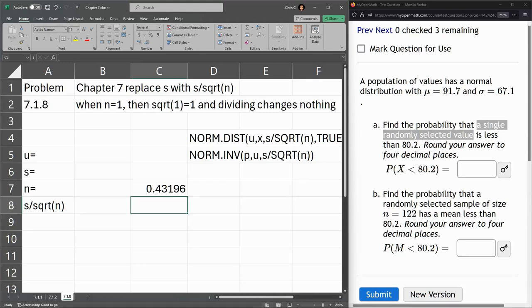So that's the answer for part a. Now, if we round this, it's 0.431...Oh, that 9 is going to round up because of the 6. So it's 0.4320. Let's see if Excel will...0.4320. There we go.